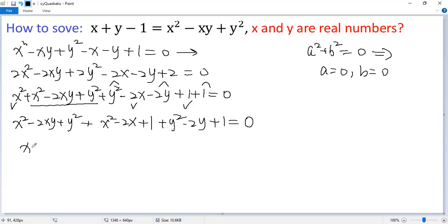So we get x minus y squared plus x minus one squared plus y minus one squared equals zero.